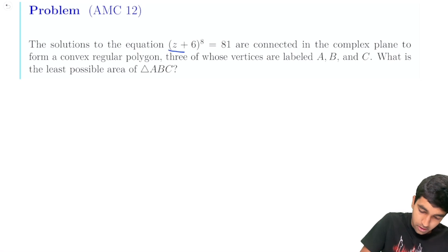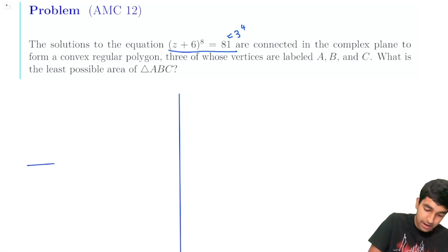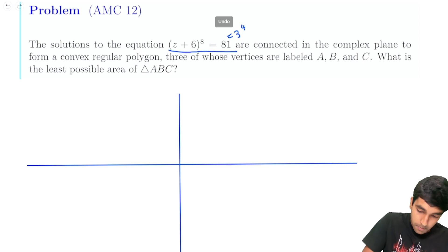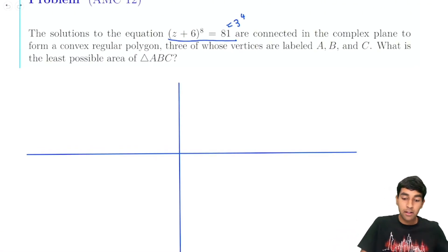So we have this ginormous equation, z plus 6 to the 8 equals 81. And when I see 81, the first thing that comes to mind is this is 3 to the 4. And that's going to be really useful. So we have this is centered in the complex plane. So let's draw out our complex plane. We have our imaginary axis and our real axis, or y and the x-axis. And they're connected in the complex plane to form a regular polygon. And if you remember from the Roots of Unity video, because it's to the power of 8, we are going to have that it's going to form a regular octagon in the complex plane. So the key thing here is that notice that z plus 6, it's going to be centered about this point, negative 6 in the plane. Our entire polygon is going to be centered around this point. And it's going to be an octagon that's centered around negative 6, because it's to the 8th power.